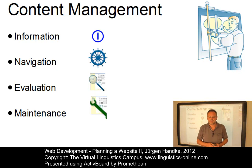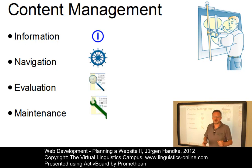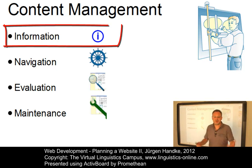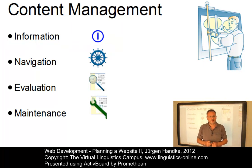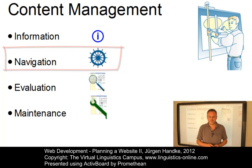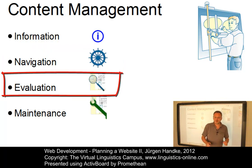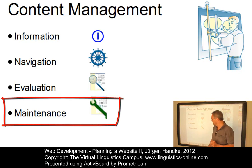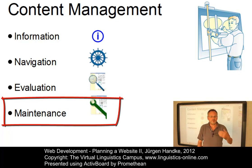The main areas of content management can roughly be divided into four central fields in more or less chronological order. First, we must ask what kind of content and services a website will have to contain. Second, we have to address navigation — designing navigation and orientation elements is the task of the graphic designer. Third, during and after the development of a site, testing and evaluation is important for success. And fourth, under the heading of Maintenance, a site should be updated and renewed from time to time.